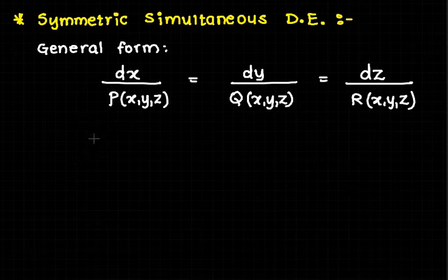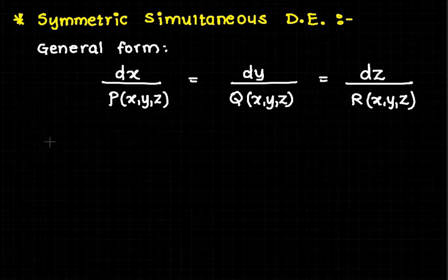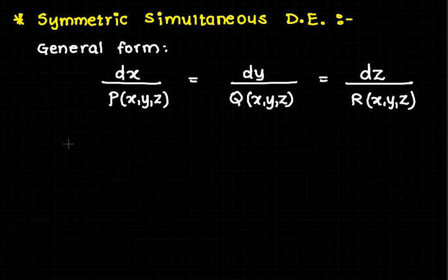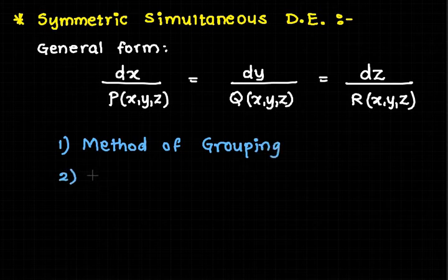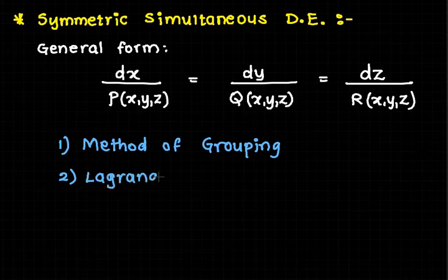To solve symmetric simultaneous differential equations, we need to find two solutions which satisfy these three ratios. There are mainly two methods of solving: the first is the method of grouping, and the second is Lagrange's method of multipliers.